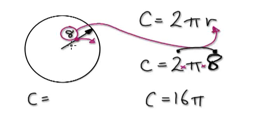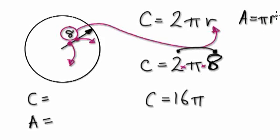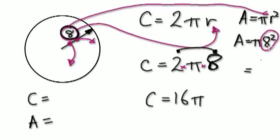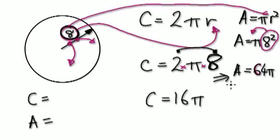If you're given this circle with a radius of 8 and you want to know the area, you have to jump from the radius to the area. Again, you've got a formula for that. The first thing you should write down is A equals pi r squared. Well, r is 8, so put the 8 into r: A equals pi times 8 squared. Powers are more important, so you do that first: 8 times 8 is 64. So the area is 64 pi.